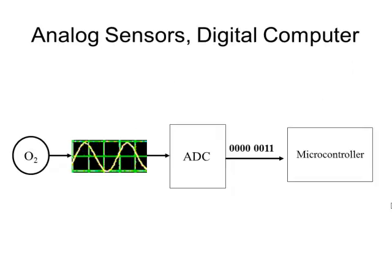Sensors produce an analog voltage output. Here we see an oxygen sensor — an O2 sensor that might be in a car's engine control unit — and it produces an analog output. That gets fed into an analog-to-digital converter, or an ADC, and coming out of the analog-to-digital converter is a binary number that gets fed into the microcontroller.